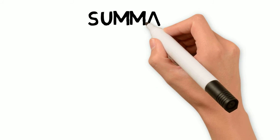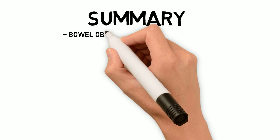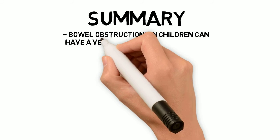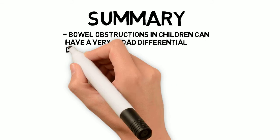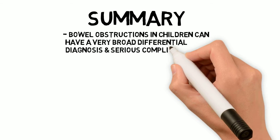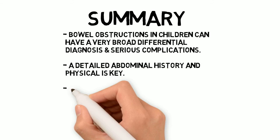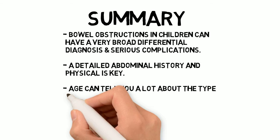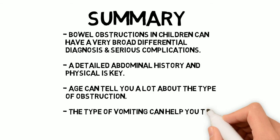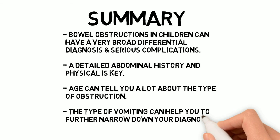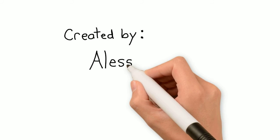Let's wrap up by summarizing what we discussed in this video. Bowel obstructions in children can have a very broad differential diagnosis. They can also have serious complications, so are important to pick up. A detailed abdominal history and physical is key. The child's age can tell you a lot about the type of obstruction you might be looking at. Vomiting is an important symptom in bowel obstruction, and the type of vomiting can help you to further narrow down your diagnosis. Thank you for watching and I hope this video was helpful in introducing you to an approach to pediatric bowel obstructions.